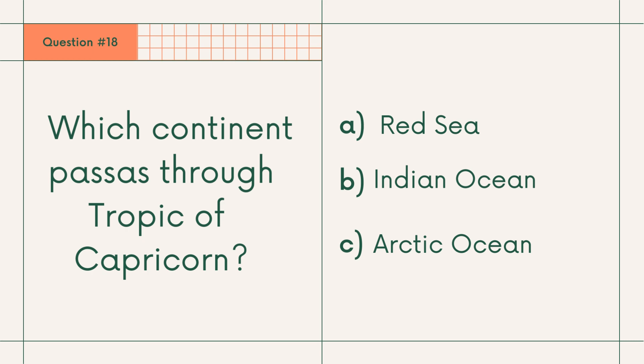Question 18: Which ocean does the Tropic of Capricorn pass through? A. Red Sea, B. Indian Ocean, or C. Arctic Ocean. Answer: B. Indian Ocean.